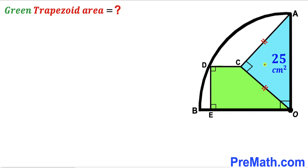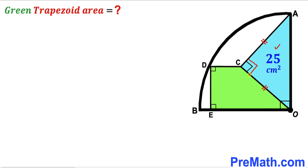Welcome to Prevath. In this video we have a blue shaded triangle and a green shaded trapezoid fully confined in a quarter circle with a center hole, as shown in the diagram. The blue shaded triangle is an isosceles right triangle, and its area has been given as 25 centimeter square. Our task is to calculate the area of the green shaded trapezoid.